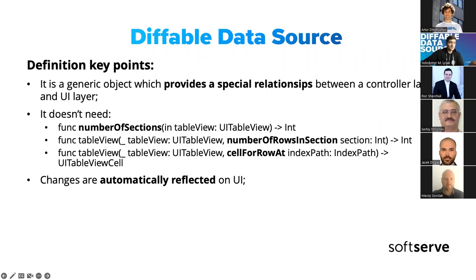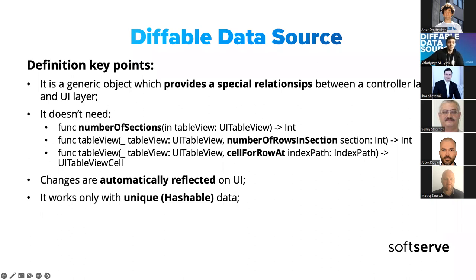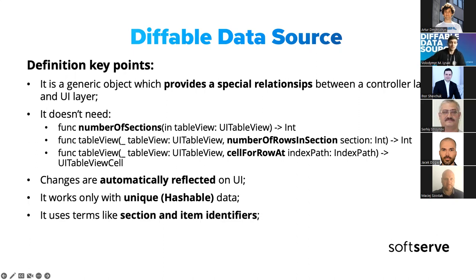Diffable data source, as its name implies, is able to understand what was changed and to perform corresponding changes on the UI automatically. This can be done because it can work with data that is unique — and yes, this is a requirement. Each section data and the row data must be hashable. This also gives an ability for the data to be diffed very efficiently, so it can be treated as an advantage.